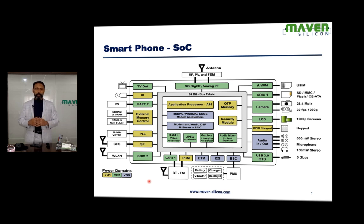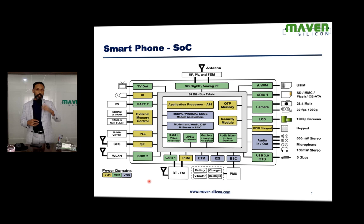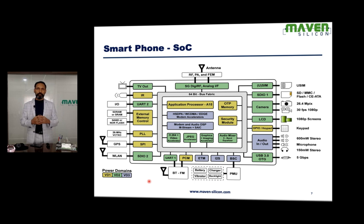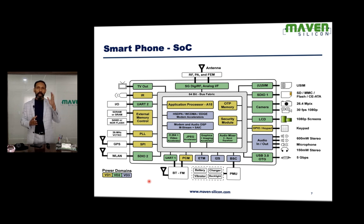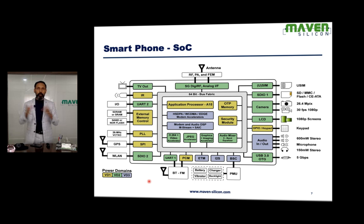Why do we do this? If you consider the CMOS power equation, power is directly proportional to the square of the voltage. So we always try to reduce the voltage level. You may think the entire chip would operate at one particular voltage with just VCC and ground, but that might not be the reality. In case of complex SOCs, we create multiple voltage islands — that is how we try to reduce the power consumption.